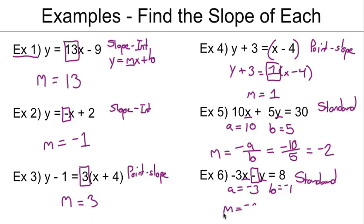And I know that my slope is the opposite of a over b. Well, a is -3, so the opposite of that would be positive 3. b is -1, so -3 divided by -1 is 3, which is my slope.